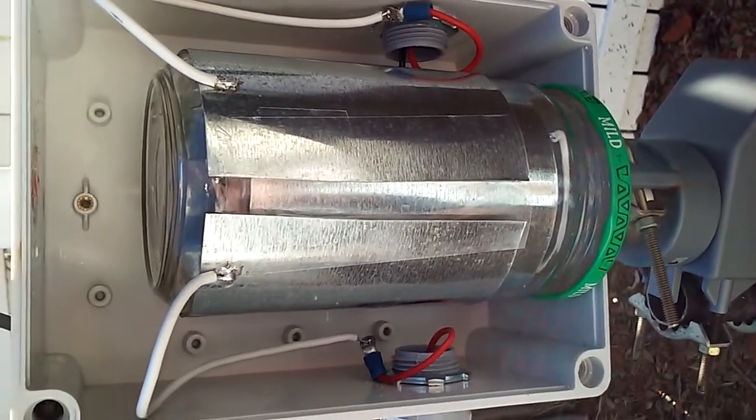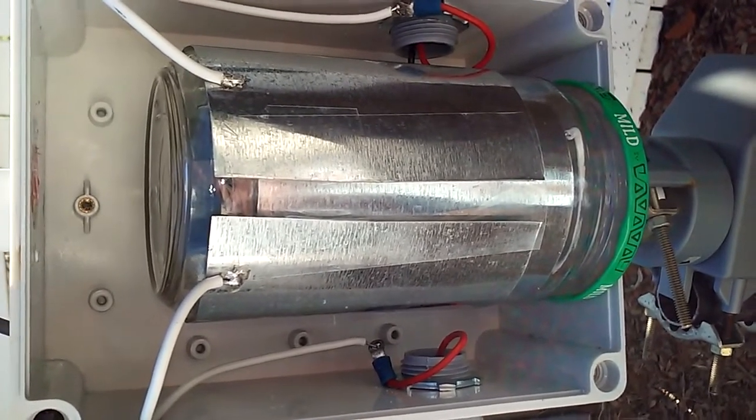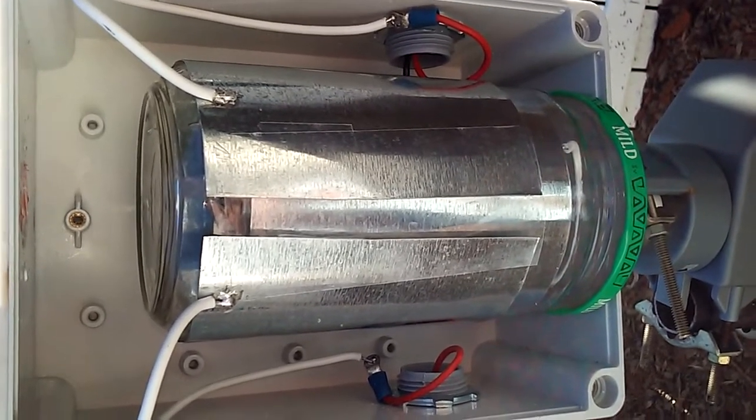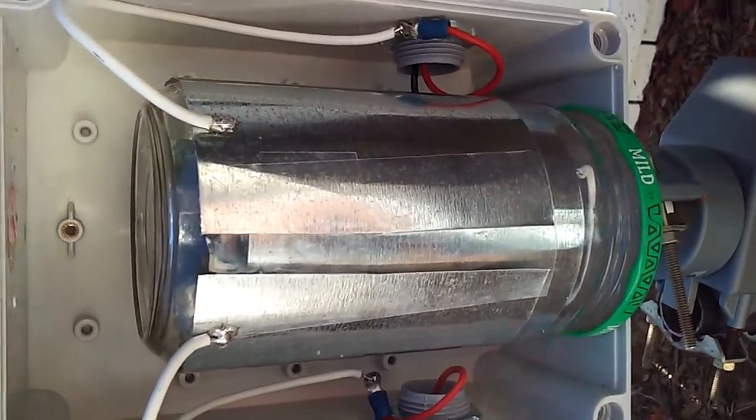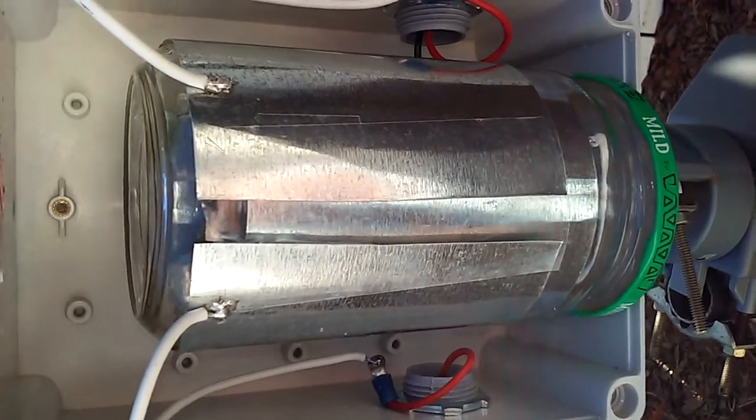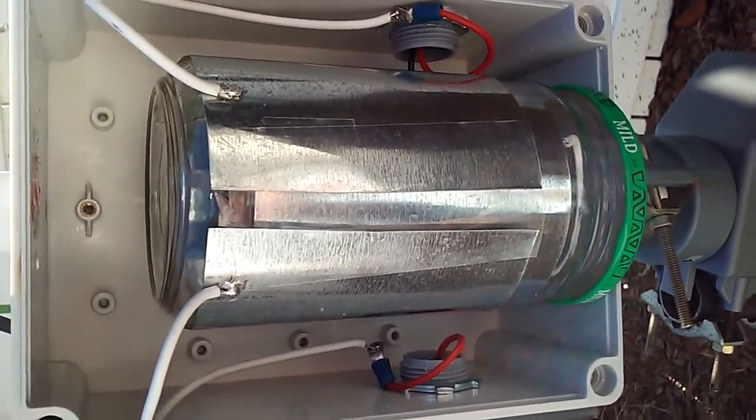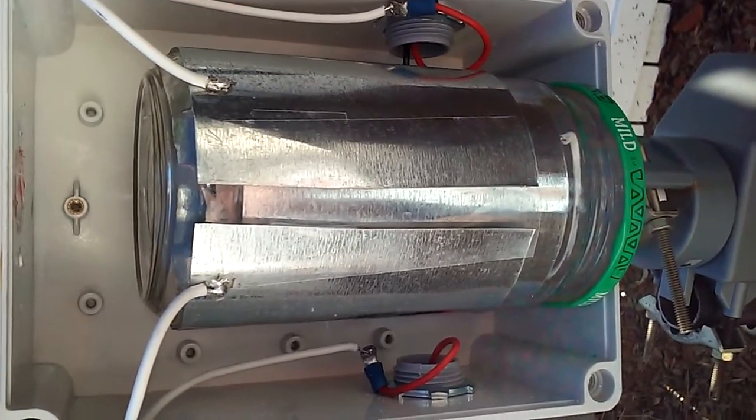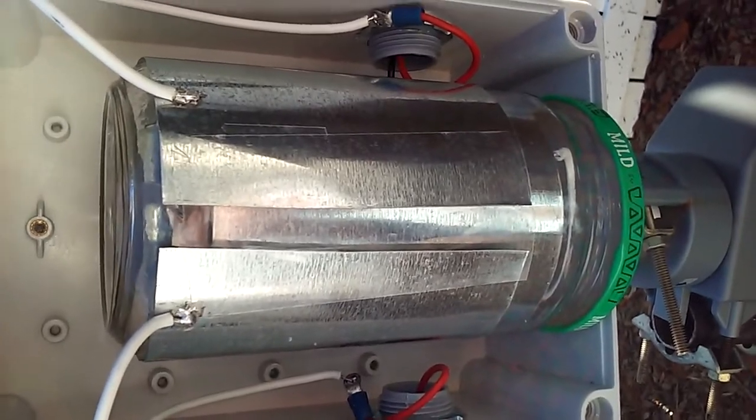So what you get is 100 picofarad from the left hand plate to the center coil on the inside, and then from the center coil on the inside you get another 100 picofarad out. So you put those two in series and you come up with 50, and my loop needs 42 picofarad to put it on 14.260 megahertz.